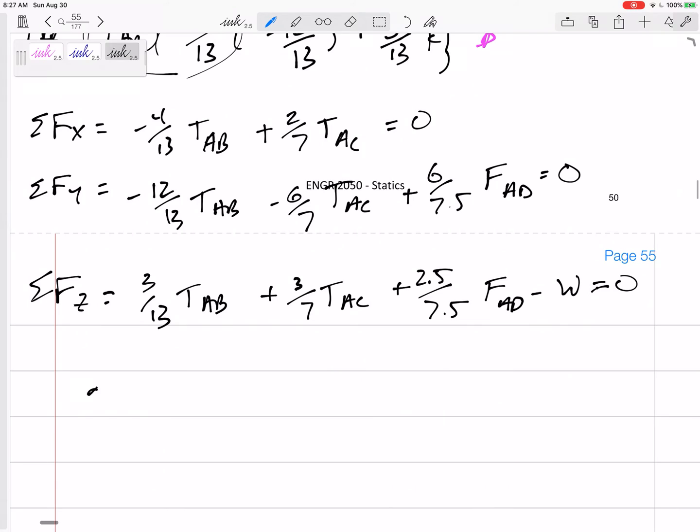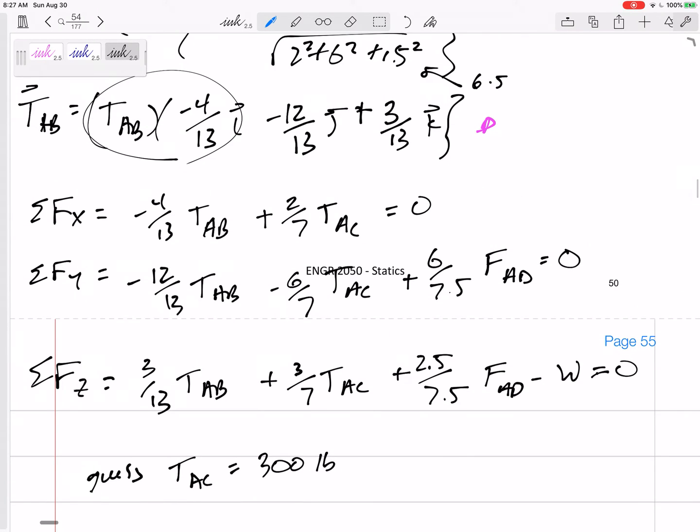Alright, so I'm going to guess TAC equals 300 pounds, right? And, talking about educated guesses, this equation might tell us which one is larger, TAB or TAC, right? 2 sevenths TAC equals 4 thirteenths TAB. So I don't really have this math here. But, I might multiply that through. And, that would tell me that TAC is, let's see, 28 over 26 TAB. Just kind of showing you that TAC is more.